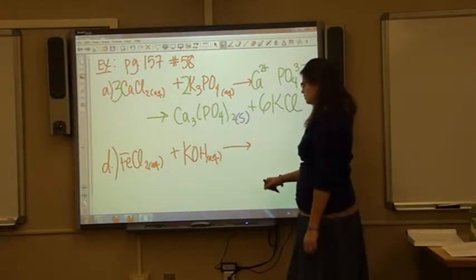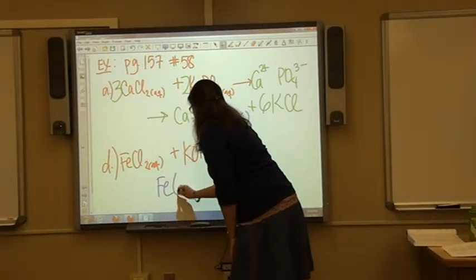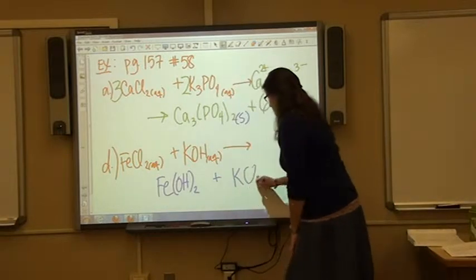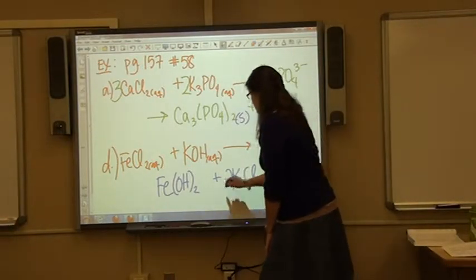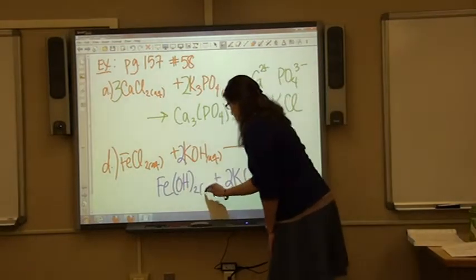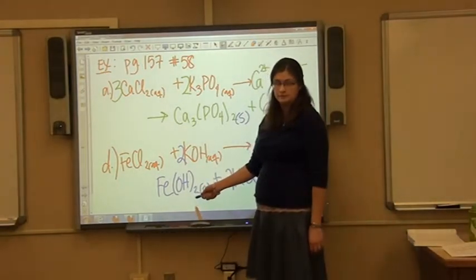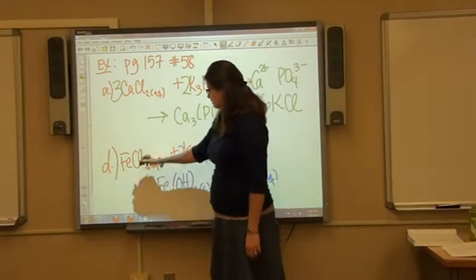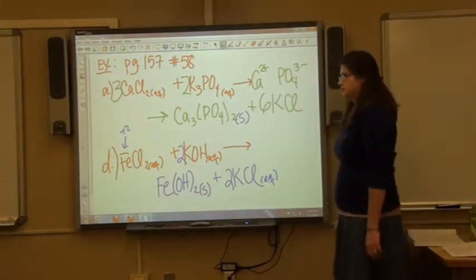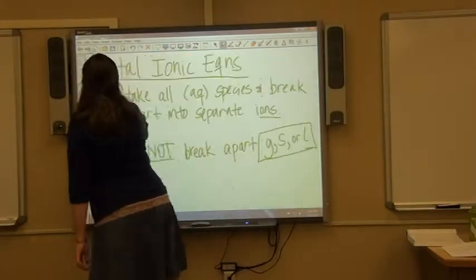Try this one on your own. Make sure you balance your equation and identify your precipitate. If you have a 3 in there, that's wrong — it must be Fe(OH)2 because your iron had a charge of plus 2.